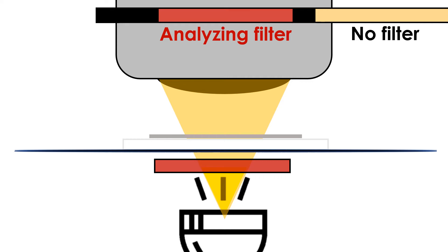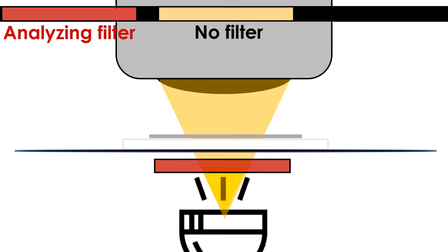The other distinguishing aspect of petrographic microscopes is that they have two filters of light. One filter, the polarizing filter, is located between the light source and stage, allowing only some wavelengths of light to pass through. The other filter, the analyzing filter, is located above the stage between the objective and ocular lenses. Unlike the polarizing filter, the analyzing filter is on a tract so it can be pushed in and pulled out as needed.